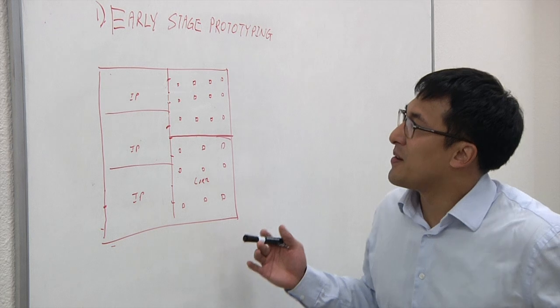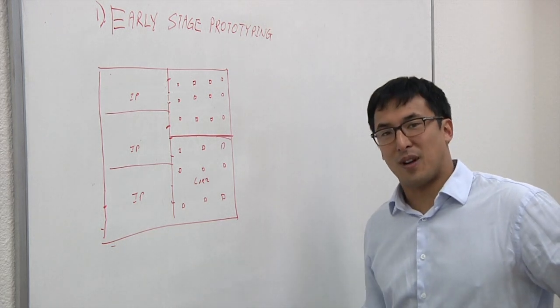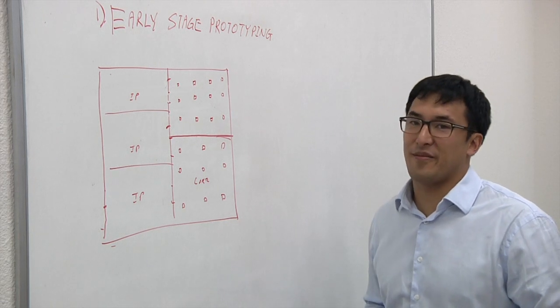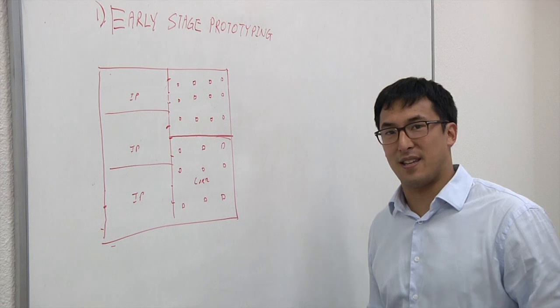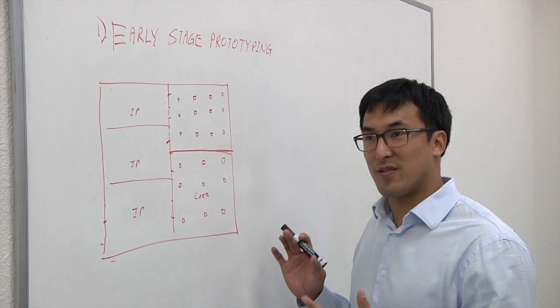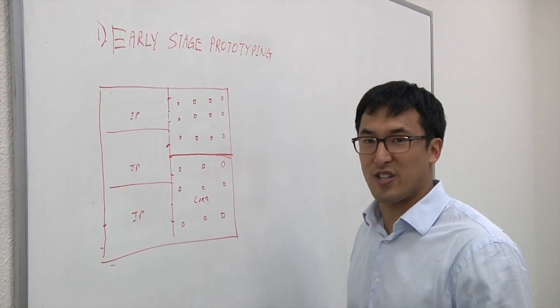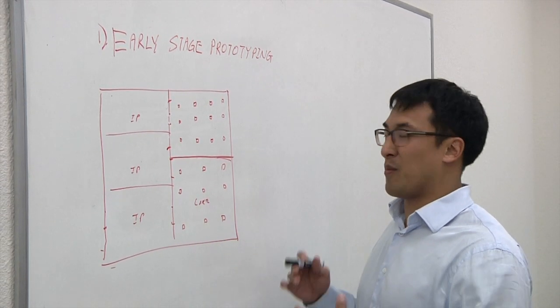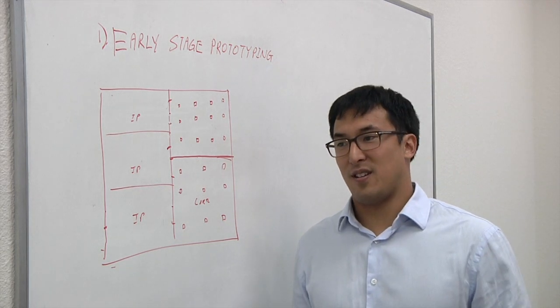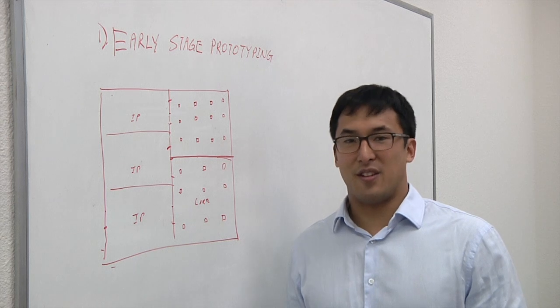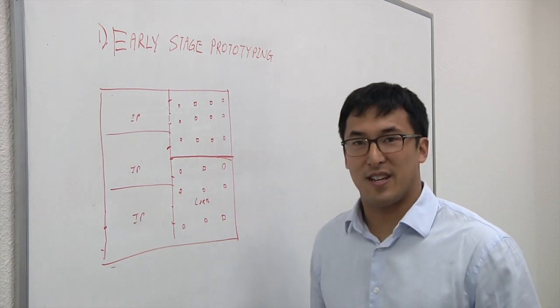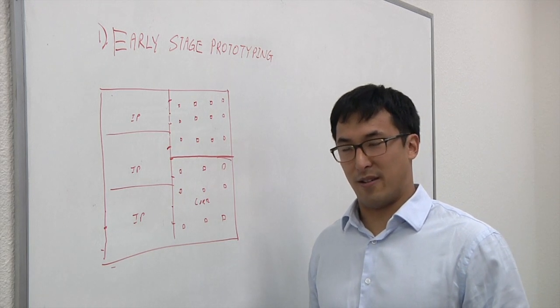As you know, many of the chips that are being signed off at the lower process nodes now are extremely complex and involve an integration of many different pieces of IP or blocks coming together. To validate the power delivery network for a particular chip is becoming more and more challenging. So I want to focus on three aspects of a methodology for signing off today. The first one I want to talk about is an approach to early stage prototyping and signing off of the power delivery network.